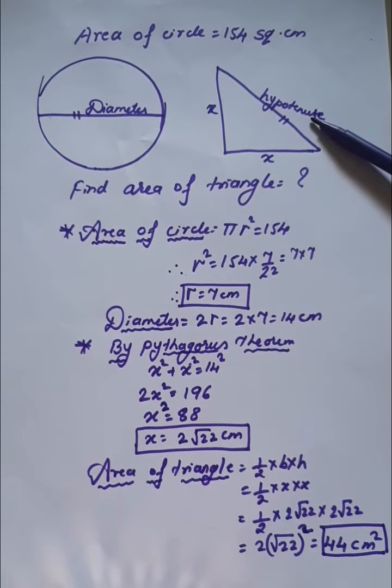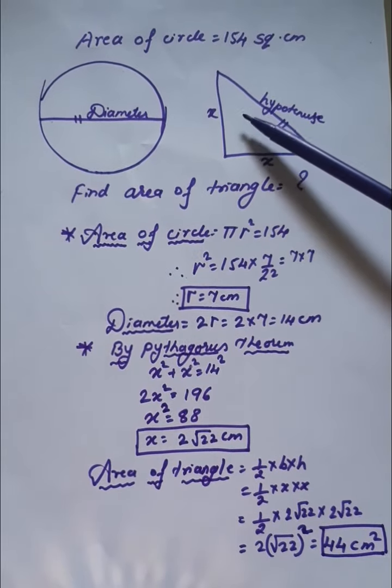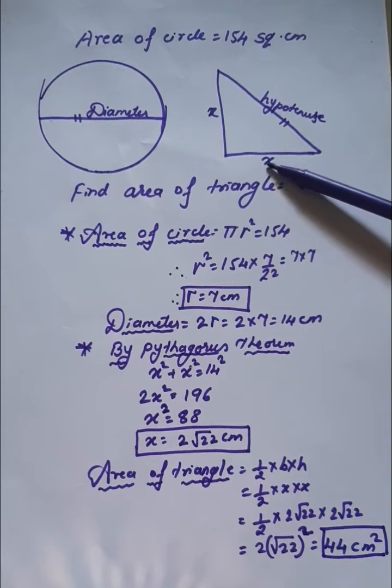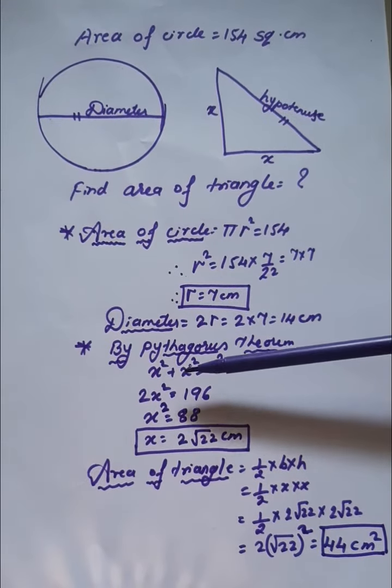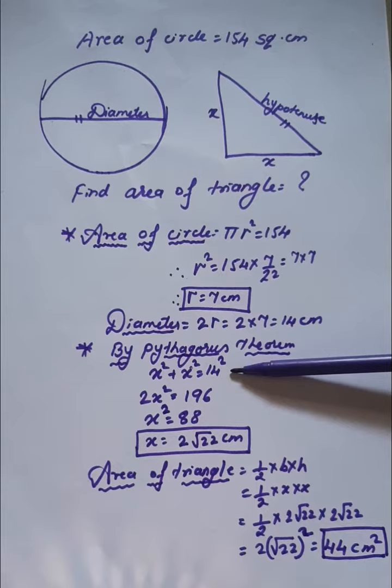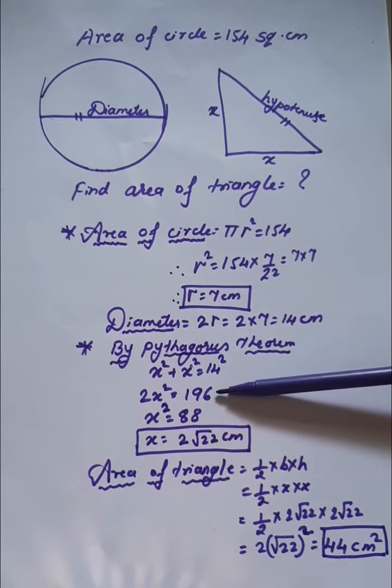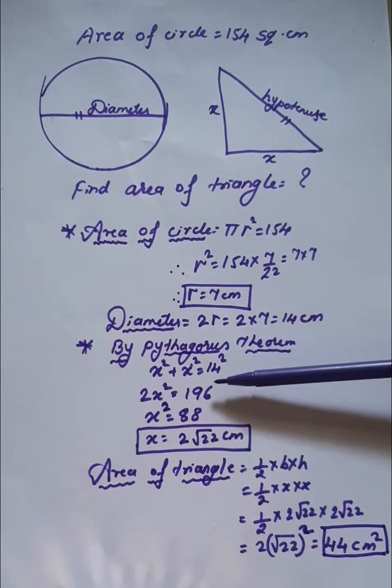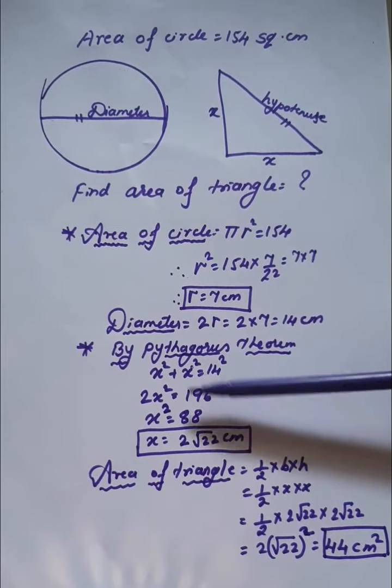We'll substitute base and height as x. Using Pythagoras theorem: x² plus x² equals 14². So 2x² equals 196. Therefore, x² equals 88 when we divide 196 by 2.